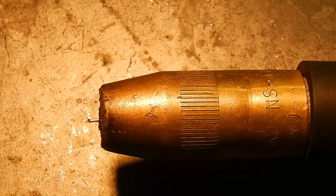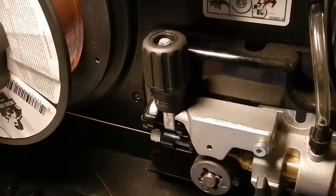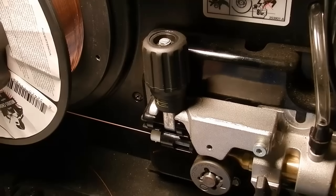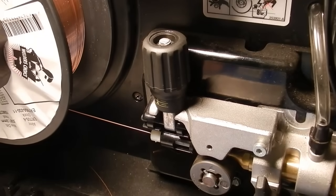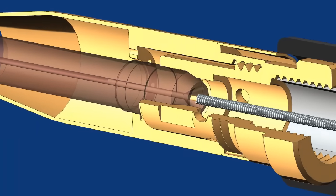In MIG welding, a thin wire acts as the electrode. This wire is fed from a spool mounted on a gun or inside the welding machine, through a flexible tube, and out of the nozzle on the welding gun or torch.